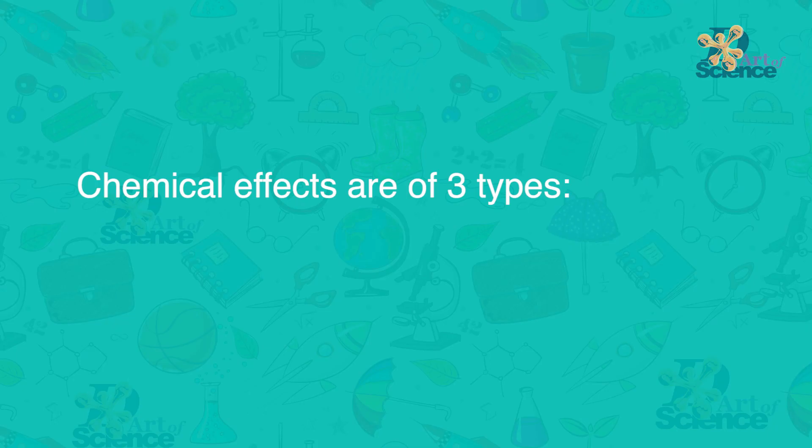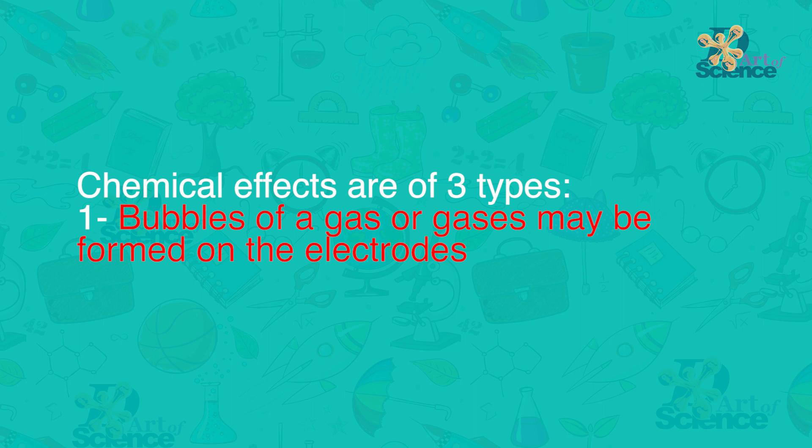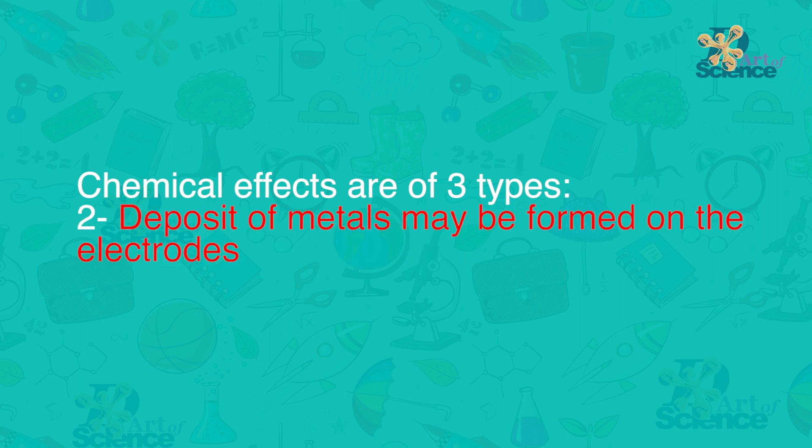Chemical effects are of three types. 1. Bubbles of a gas or gases may be formed on the electrodes. 2. Deposit of metals may be formed on the electrodes. 3. Changes in colour may be formed in the solution.